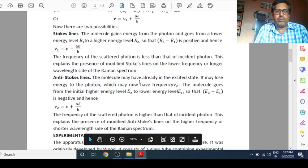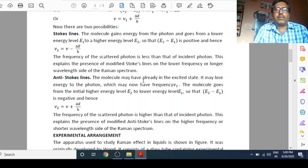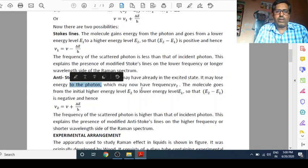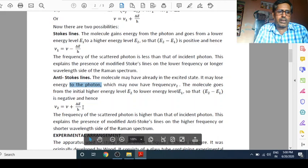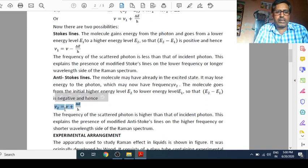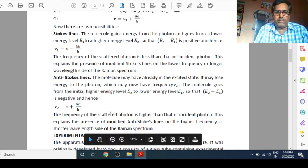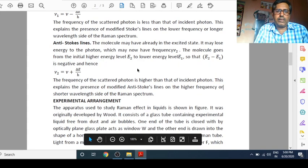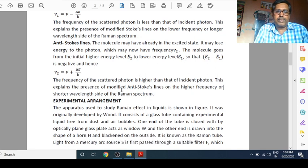Second possibility, when molecule suppose already in the excited state, and when photon incident, it will not gain energy, instead it will lose energy. So it may lose energy to the photon, which may have frequency nu2. And on the basis of above calculation, similar to above expression, we can write nu2 is equal to nu plus del E by H. Here, plus means frequency of the scattered photon is higher than that of incident photon. This explains the anti-Stokes lines on the higher frequency or shorter wavelength side of the Raman's spectrum.